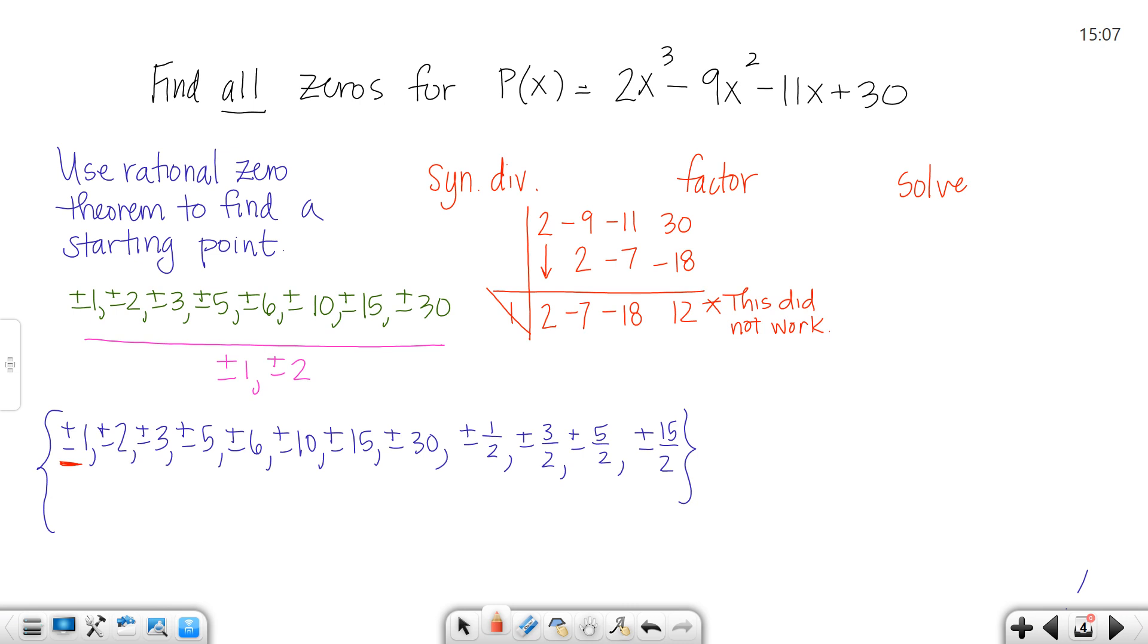We'll keep going down our list. Next we'll try negative 1. You keep going through synthetic division until you find one that works. If you haven't seen this before, this is called synthetic division - you need to brush up on it. At this point, I'm assuming you've already mastered that objective. With synthetic division, I bring down my first digit, multiply and add, multiply and add, multiply and add. This did not work.